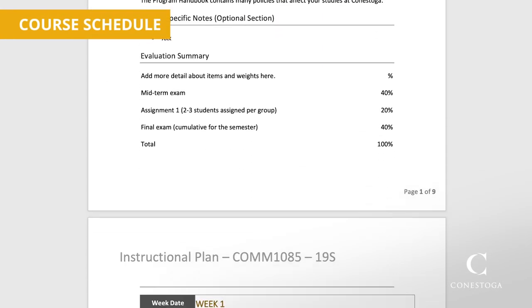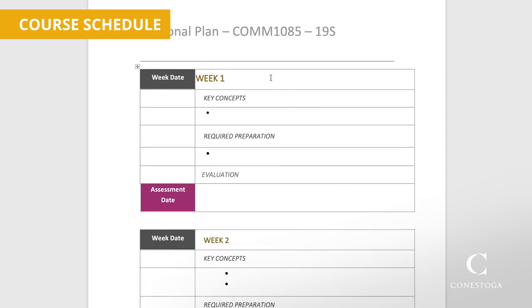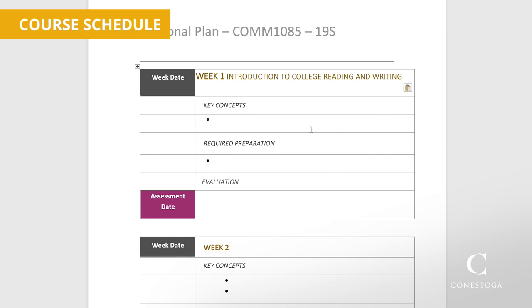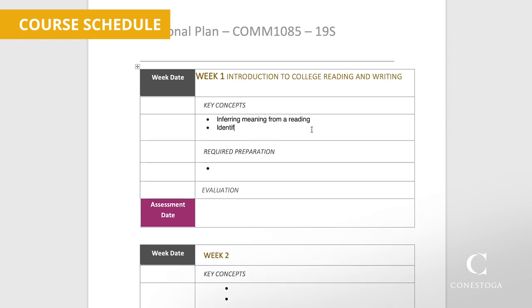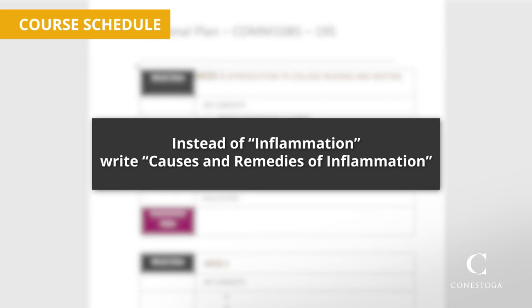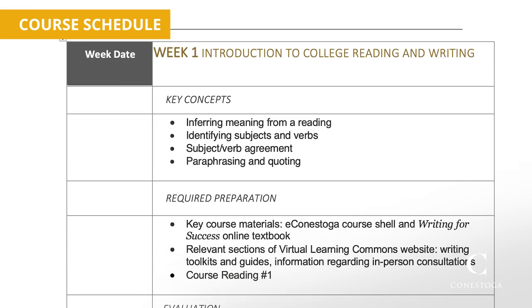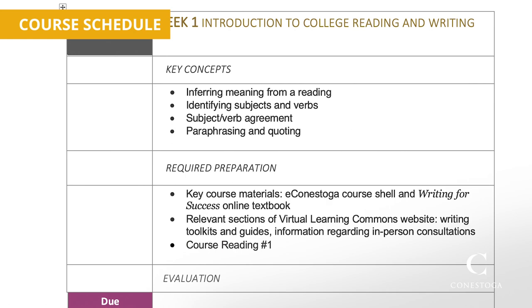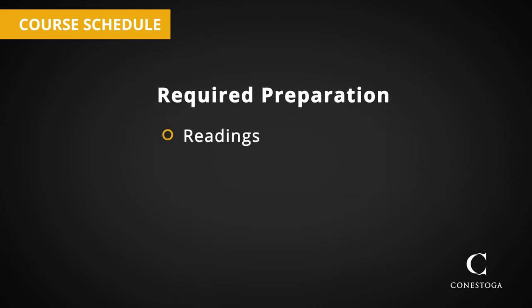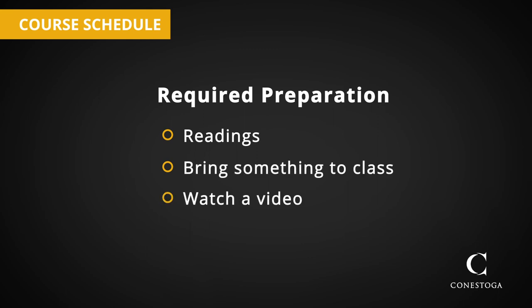Now you get to the good stuff — the course schedule. This is the plan that shapes your course week by week. List the key concepts for each class; this tells students the topics you're covering that day and will be a good review later for exams. Work closely with the concepts discussed in your course outline. A bit of detail is helpful — for example, instead of just writing 'inflammation,' describe it as 'causes and remedies for inflammation.' Required preparation is the work you're expecting students to do before class, such as reading, bringing something to class, or watching a video.